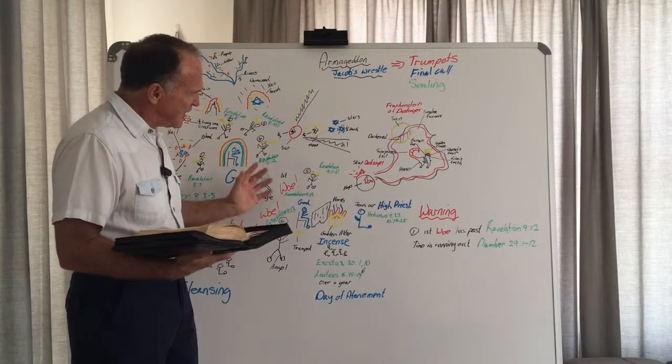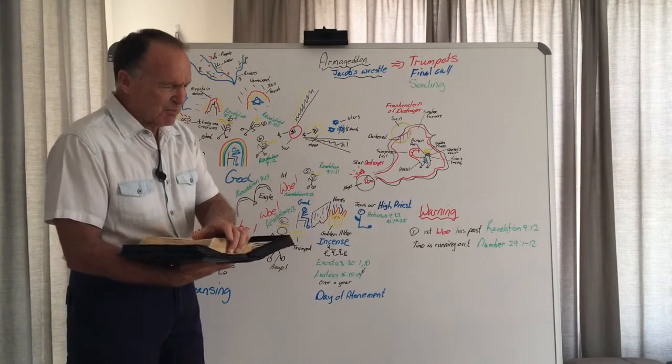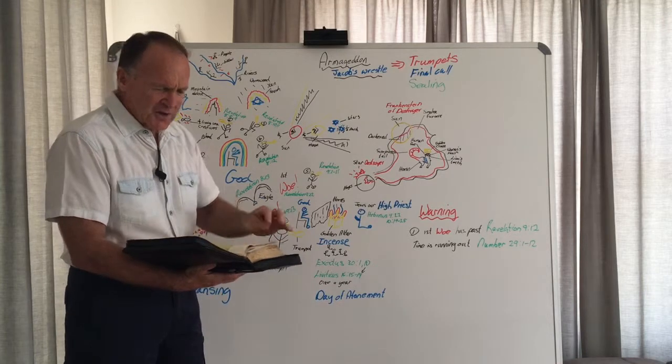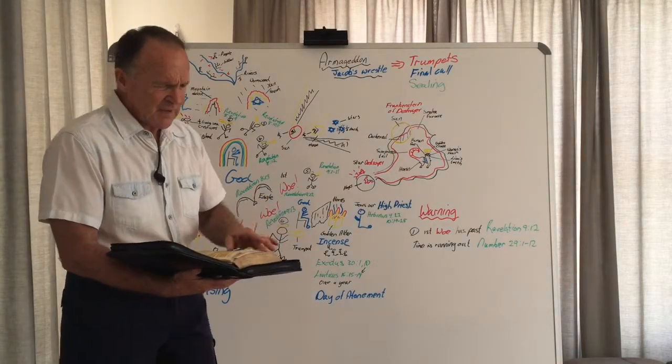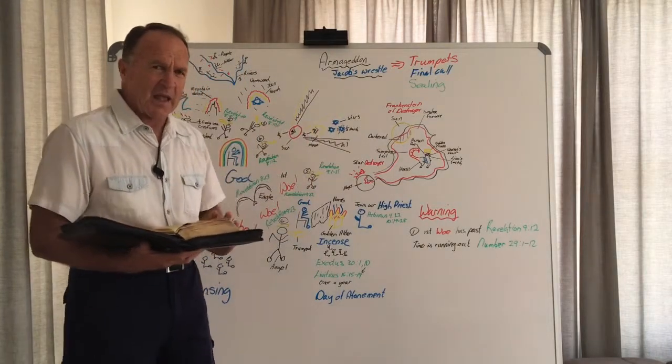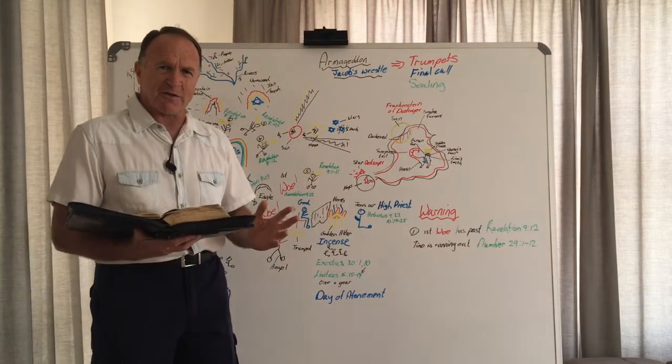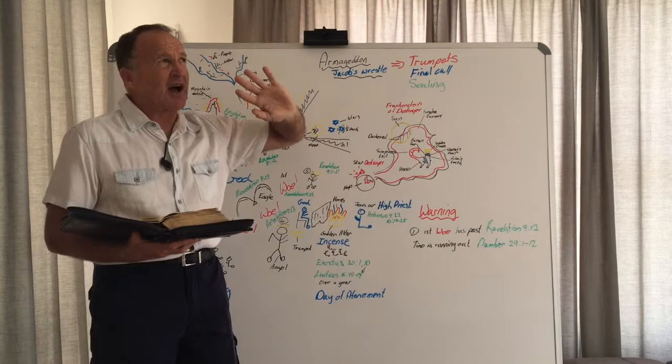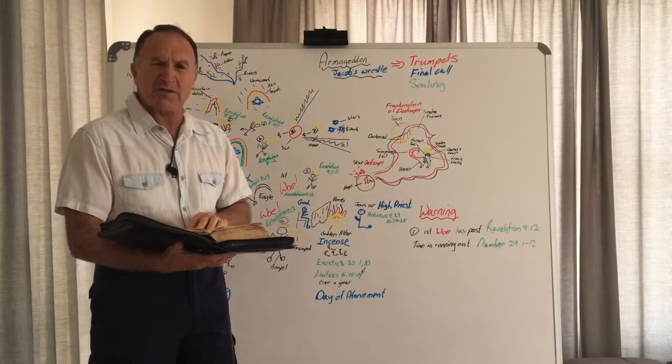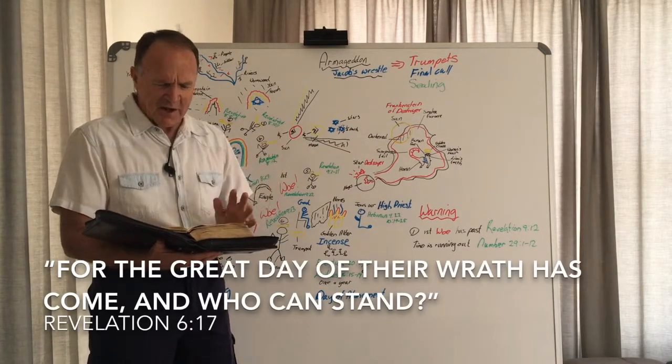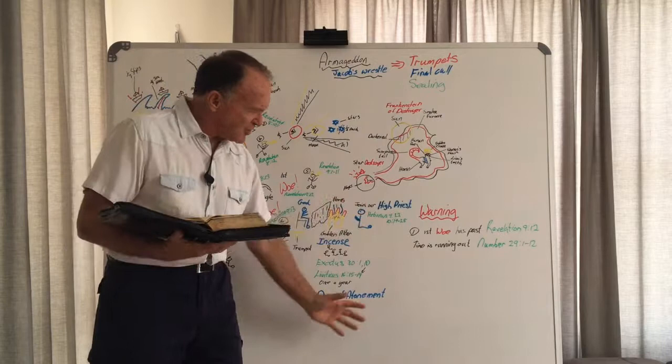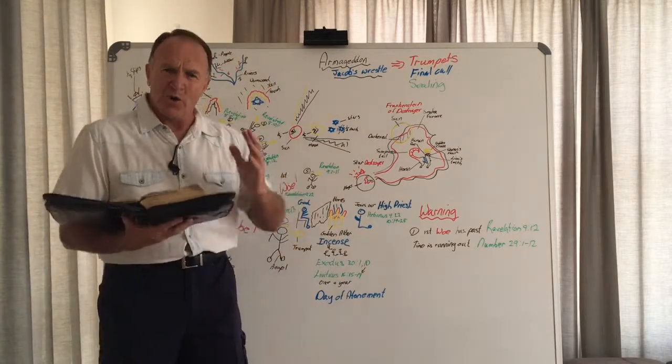Before we read the blowing of the sixth trumpet, I would like to remind you of the time period we find ourselves in. In Revelation chapter 6, we went through different dispensations of time, and we've come to the last dispensation. We had the stars falling from the sky, the sun and moon going dark. Then the question was asked in Revelation 6:17, For the great day of their wrath has come, and who can stand? As we approach the day of atonement, the question is asked, who can stand?